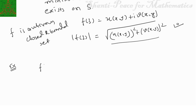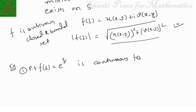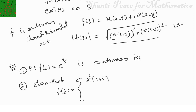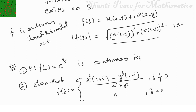As exercises: first, prove that e^z is continuous. Second, show that f(z) = (x³(1+i) − y³(1−i))/(x²+y²) for z ≠ 0, and f(0,0) = 0, is continuous at the origin.